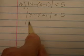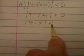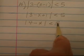Let's combine like terms. This will be 4 minus x. The absolute value of 4 minus x is less than 5.